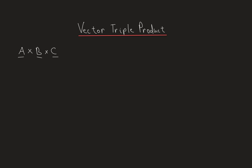It's important to note that when you compute a cross product, the order of the vectors matters, which means I need to put parentheses around whichever cross product I do first. Indeed, the cross product is non-associative, which means that computing a cross (b cross c) is different from computing (a cross b) cross c.